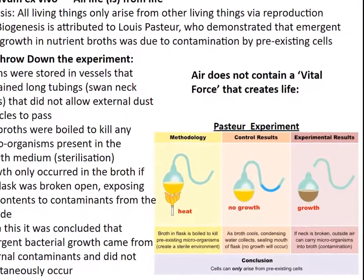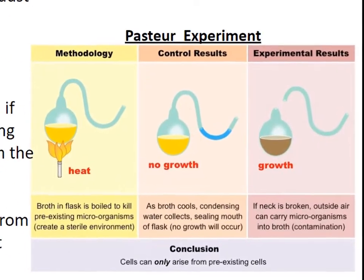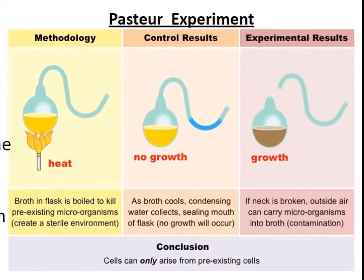Let's discuss his methods and process. Broths were stored in vessels that contained long tubing called swan neck ducts that did not allow external dust particles to pass. The broths were boiled to kill any microorganisms present in the growth medium — this is called sterilization. He purposefully broke some of the flasks and kept some intact. Growth only occurred in the broth if the flask was broken open, exposing the contents to contaminants from the outside. Pasteur concluded that emergent bacterial growth came from external contaminants and did not spontaneously occur — therefore, air did not contain a vital force that creates life, and life comes from life.